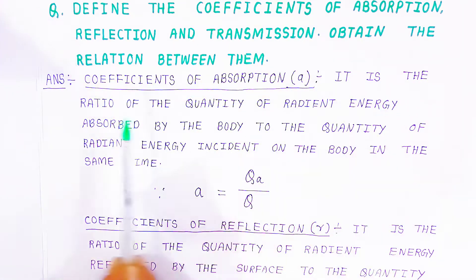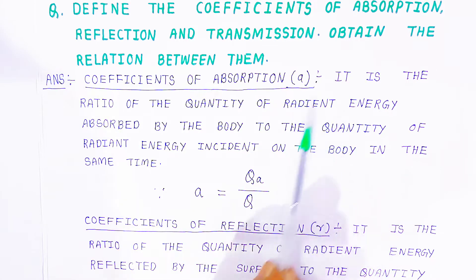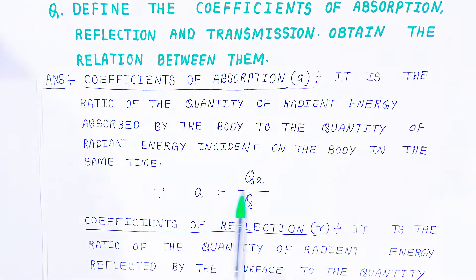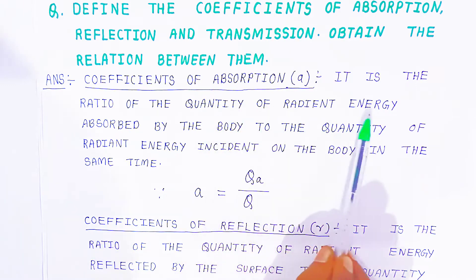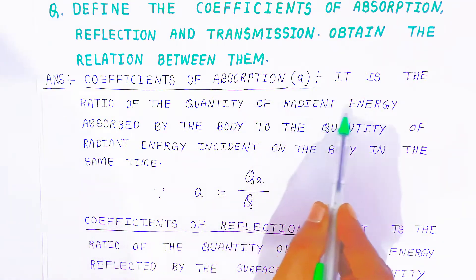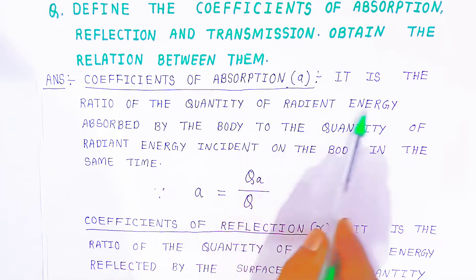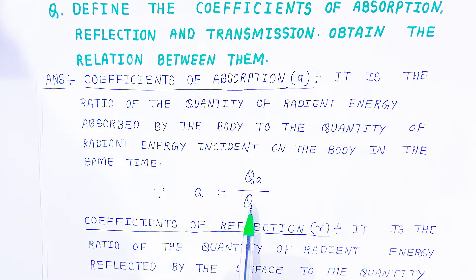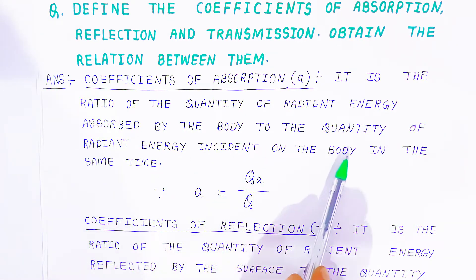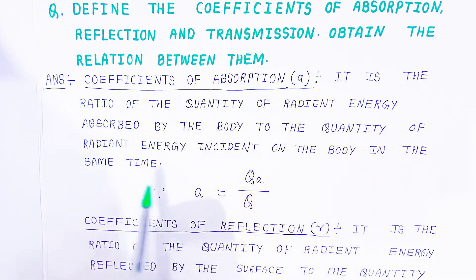How you are going to define this: it is the ratio of the quantity of radiant energy absorbed by the body — that is QA — to the quantity of the radiant energy incident on the body, in the same time.